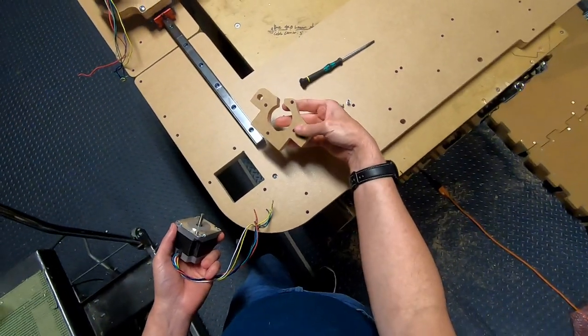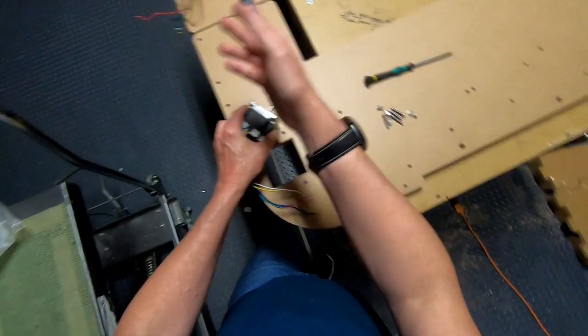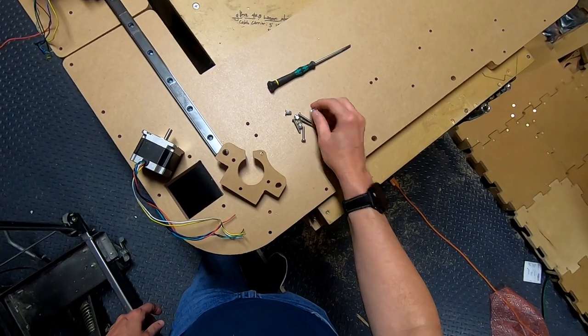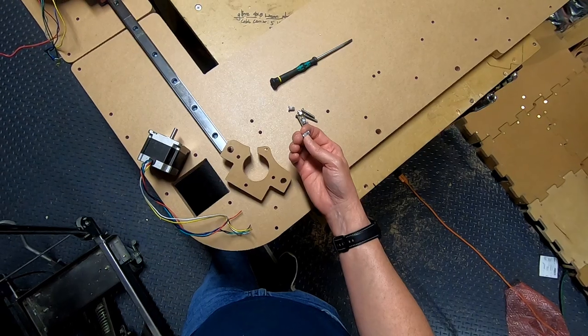Using this part here, a motor, the same motor we used in the other axis, four number eight screws, and four nut inserts or rivet nuts.